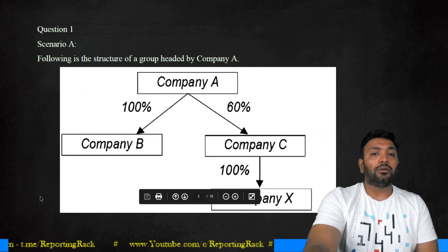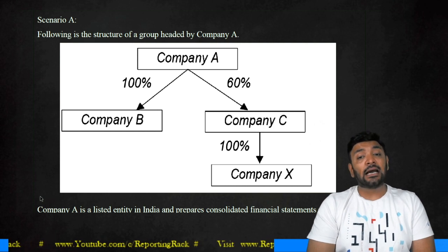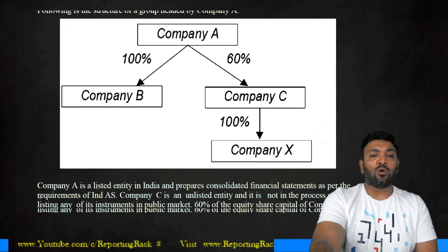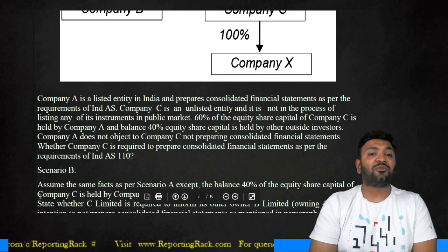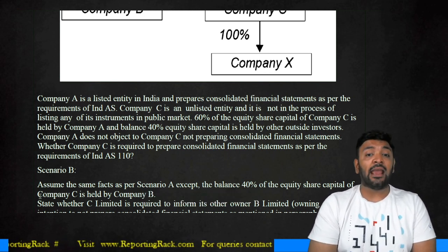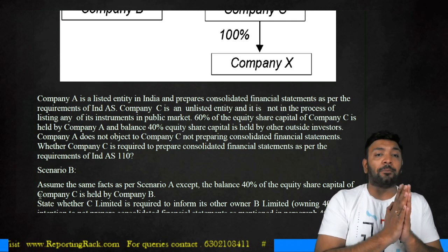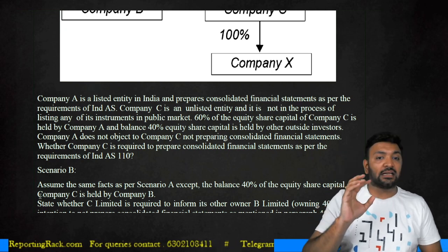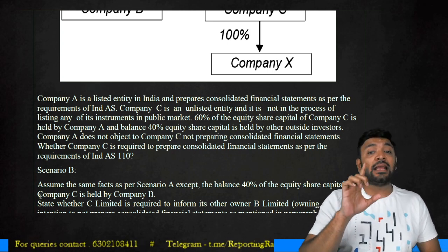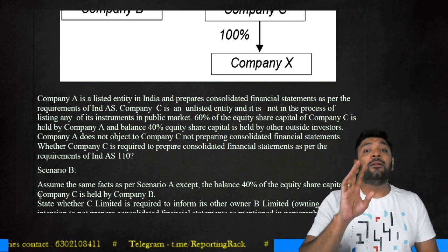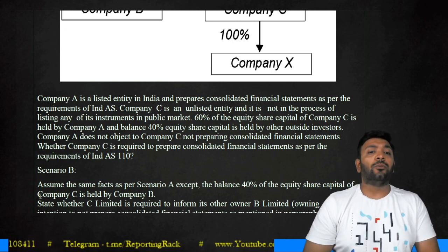Look at the next question: Company A has 100% shares in Company B and 60% shares in Company C, while Company C in turn holds 100% shares in another company. Company A is a listed enterprise and prepares consolidated financial statements as per the requirements of Ind AS. Company C, which is a subsidiary of Company A, is an unlisted entity and is not in the process of any listing. 60% of share capital of Company C is held by Company A, and the balance 40% is held by outsiders. Company A does not object to Company C not preparing consolidated financial statements. The ultimate parent company is preparing financial statements on a consolidated basis as per Ind AS — so whether Company C, the interim parent, is required to prepare financial statements.